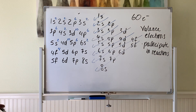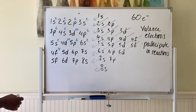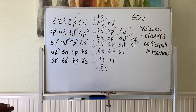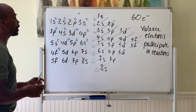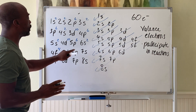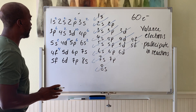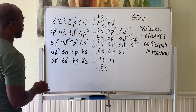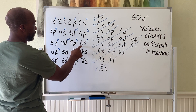For this 60-electron atom, to find the number of valence electrons, you find the highest-numbered shell that has electrons in it — in this case, it is the sixth shell.